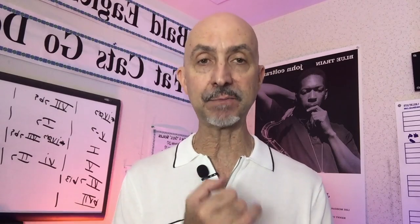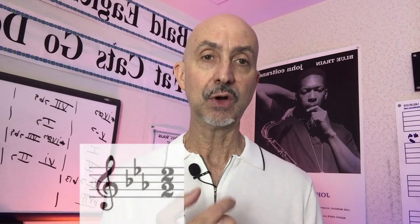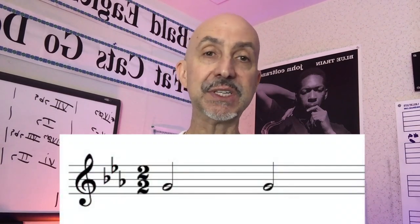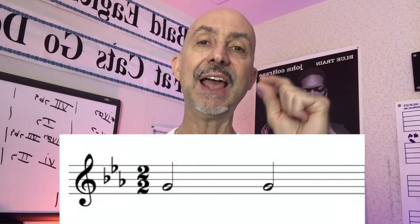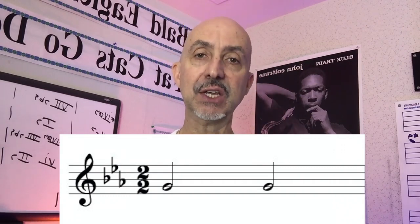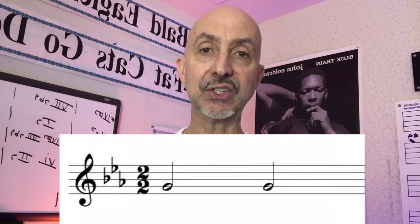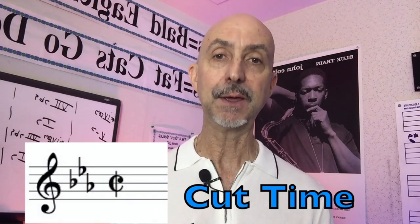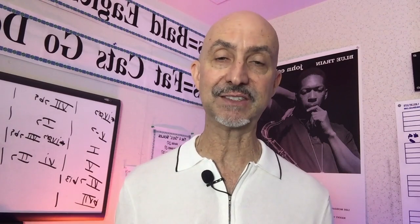Occasionally on the bottom number, you will see a two or an eight. Very rarely you'll see a 16 or even a 32nd — that's in some more complex music. Sometimes you will see two two, which means two beats in a measure and the half note gets one beat. This time signature is also called cut time, and you will commonly see a common time signature with a slash through it, meaning cut time.